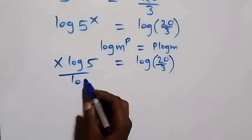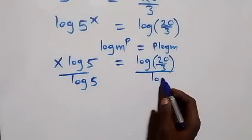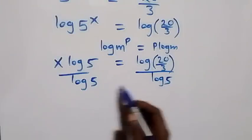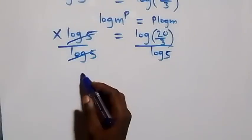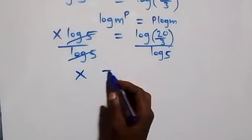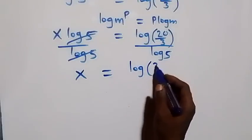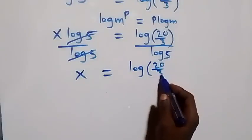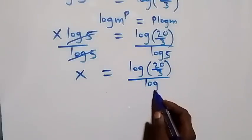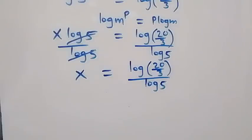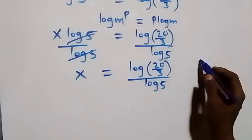The next step we divide both sides by log five. We divide here by log five and also divide here by log five. On this side log five cancels, and we have x equals to log twenty over three divided by log five.